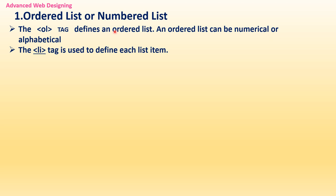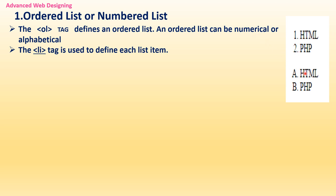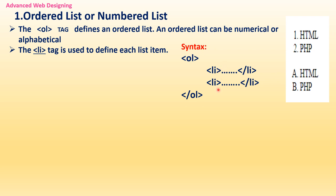An ordered list can be numerical (1, 2, 3, 4) or alphabetical (A, B, C, D). The LI tag is used to define each list item — LI stands for list. So along with the OL tag, you must use the LI tag. The syntax is: write the OL opening and closing tag, and inside, place as many LI tags as list items you need. LI is also a container tag with an opening and closing tag.